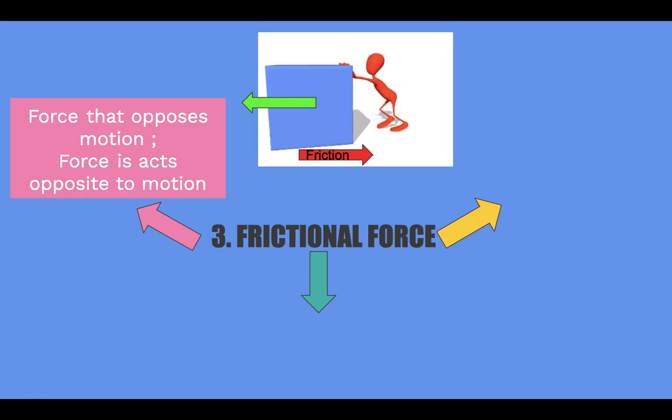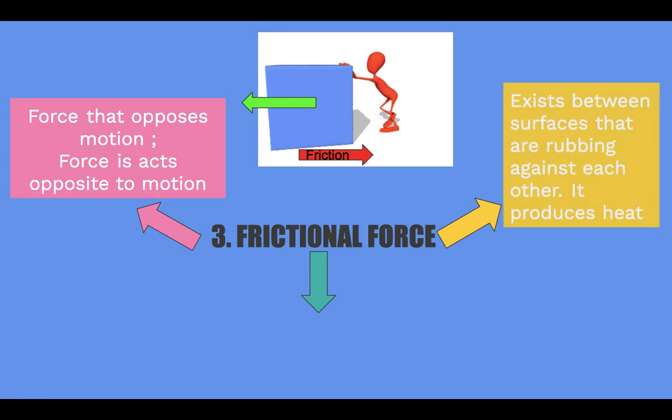So, a stationary object which is not moving would not have any friction force acting on it. Frictional force exists between surfaces that are rubbing against each other. It produces heat as a result.